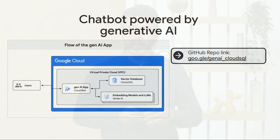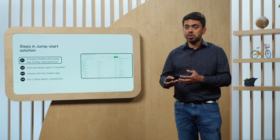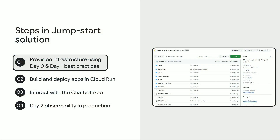Let's look at the technology components of this jumpstart solution. In the architectural diagram, you can see Cloud Run is used for deploying the application, Cloud Run talks to Cloud SQL acting as the vector database, and the application also talks to Vertex AI for different embedding models and LLM models. When you use this jumpstart solution, there are essentially four steps: deploy and provision the infrastructure, build and deploy the application, interact with the application, and observe how the application is performing.